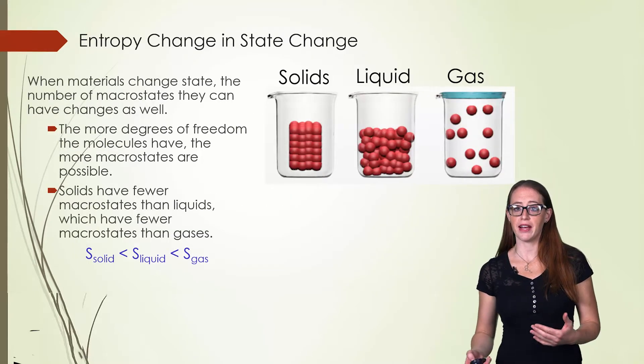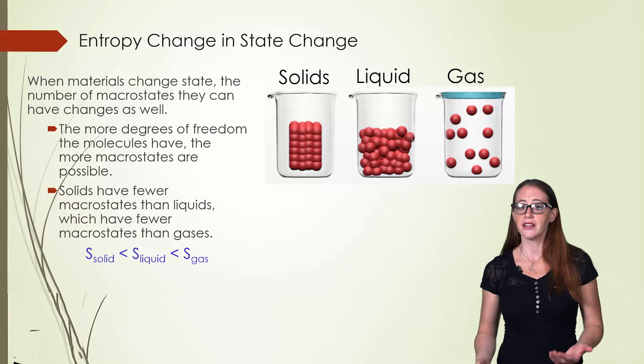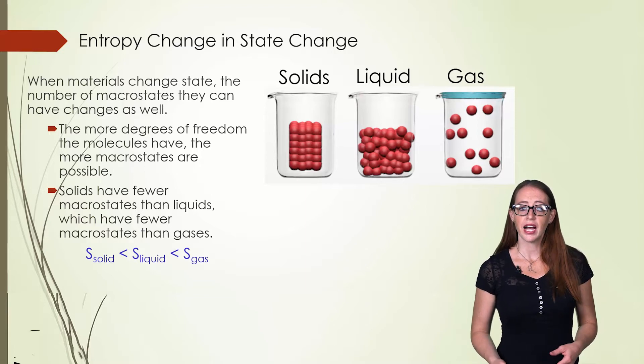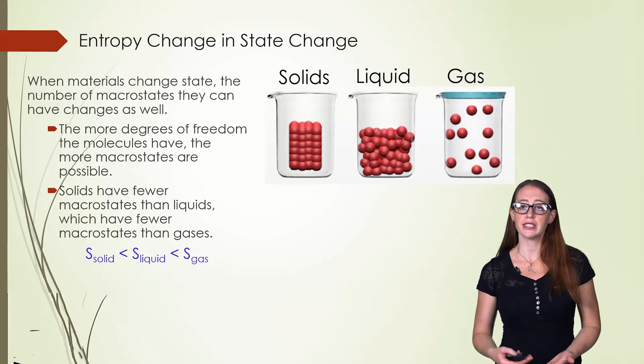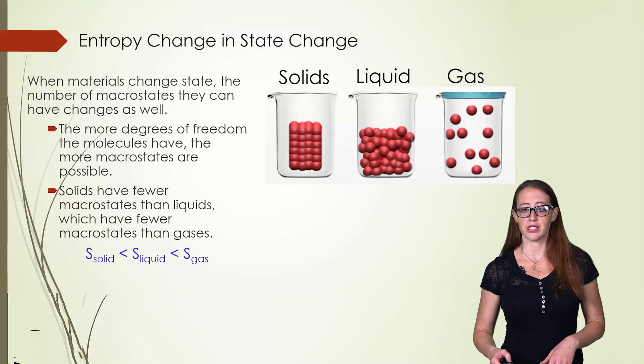Because different states of matter have different number of macro states, the entropy of each is different. On the slides I have the more formal description of this, but it should feel relatively intuitive based on your understanding of the states. So I'm going to talk about this more conversationally.